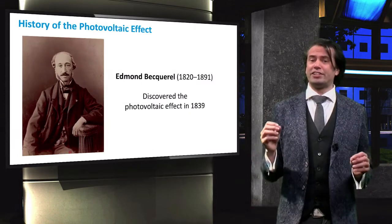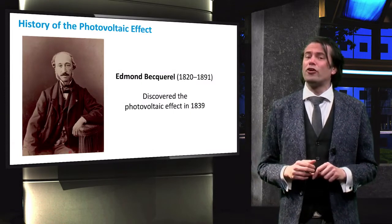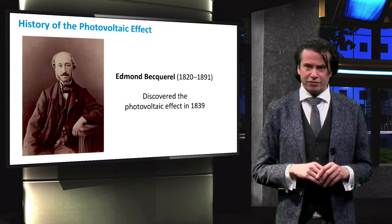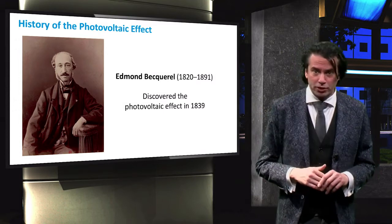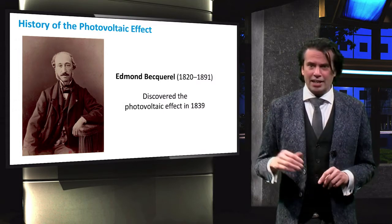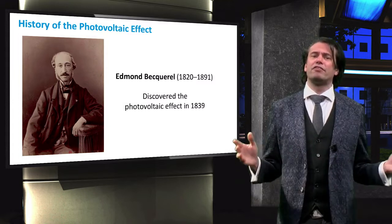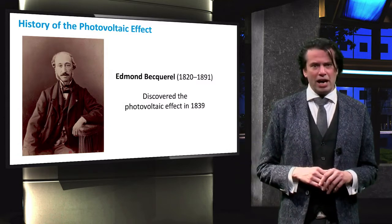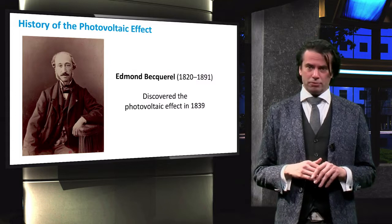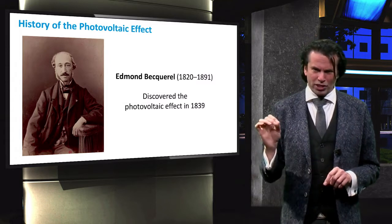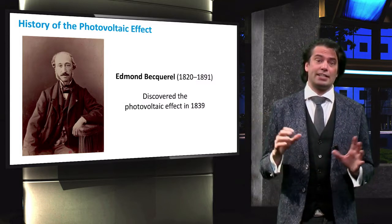The photovoltaic effect was discovered in 1839 by the French physicist Edmond Becquerel. At the age of 19, Becquerel created the first photovoltaic cell by illuminating platinum electrodes coated with silver chloride in an acid solution.